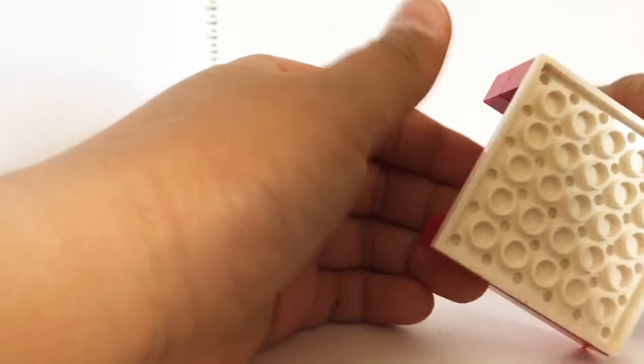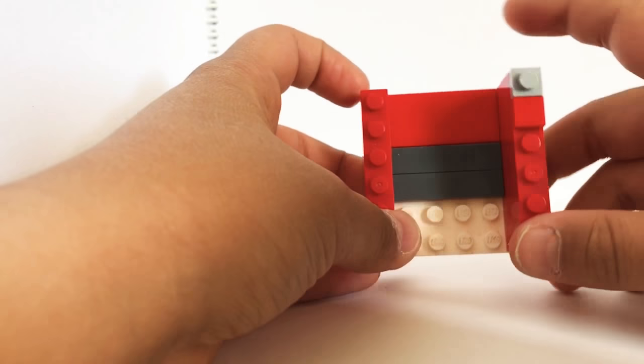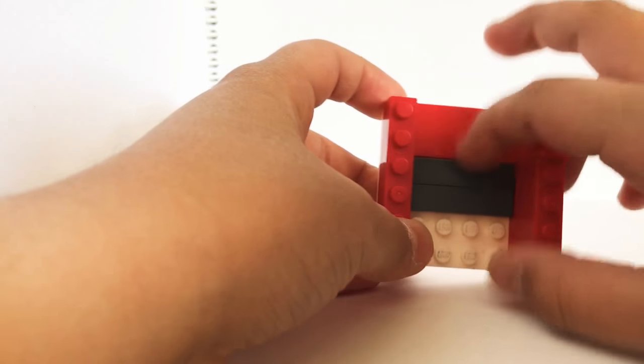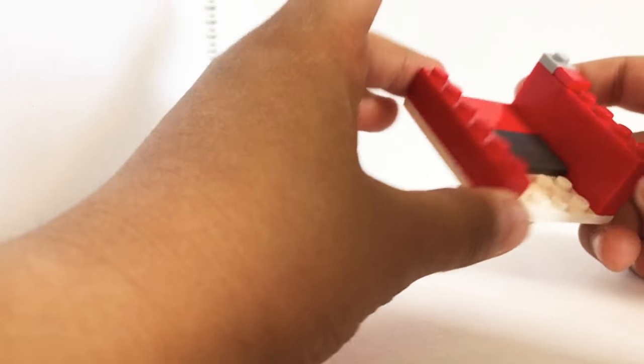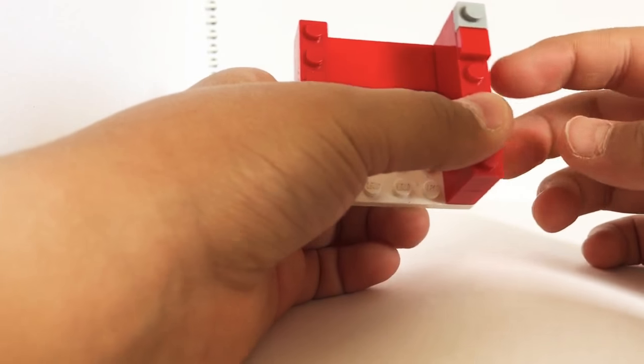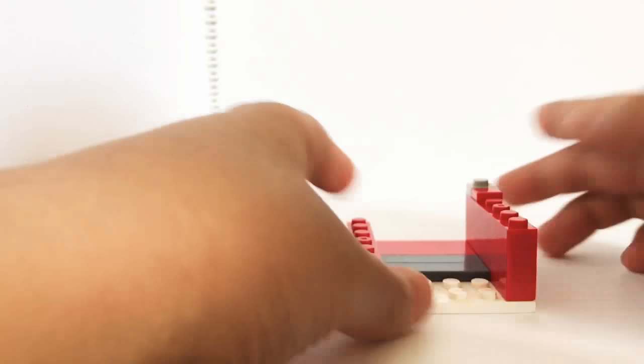So let's get started with the base. Get a 6x6 base plate and smooth right there, so a 4x4 smooth piece you can put it right there. 1x6 brick, 2 layers so 4x6 brick, a 1x1 smooth and a 1x1 plate right there.